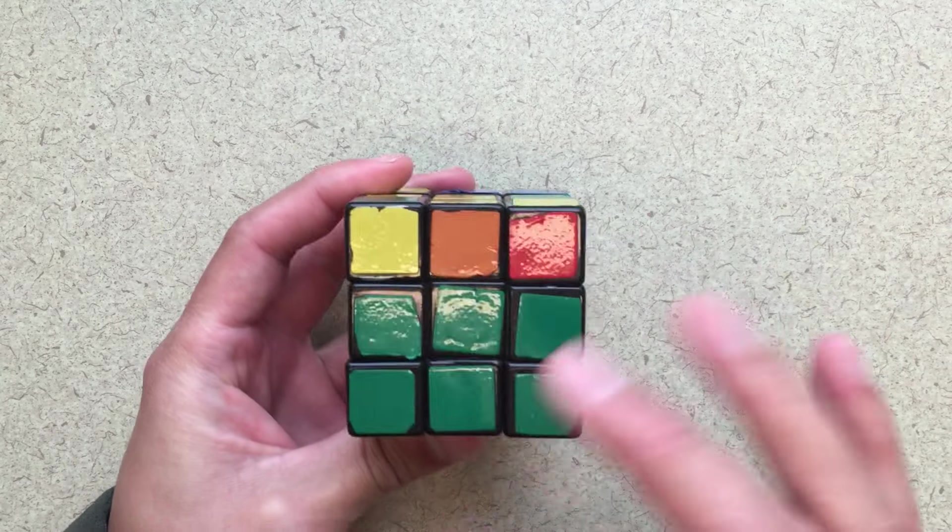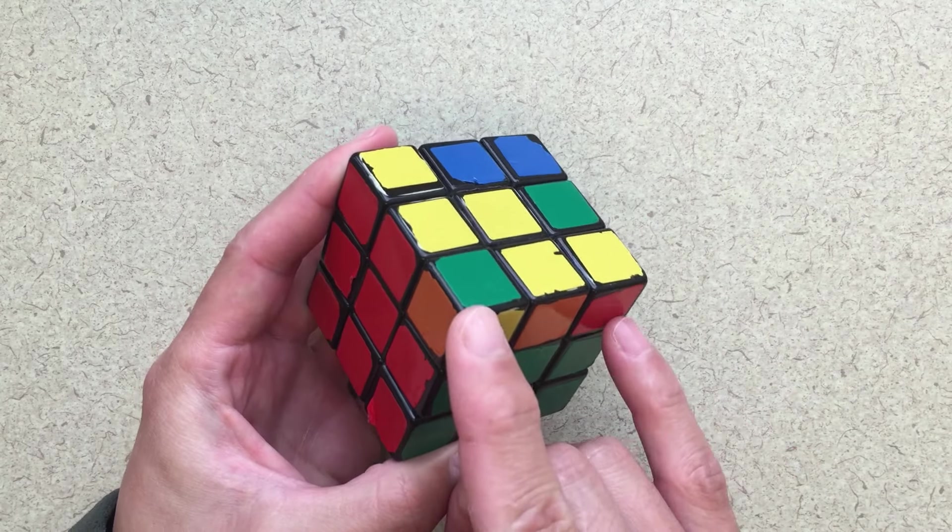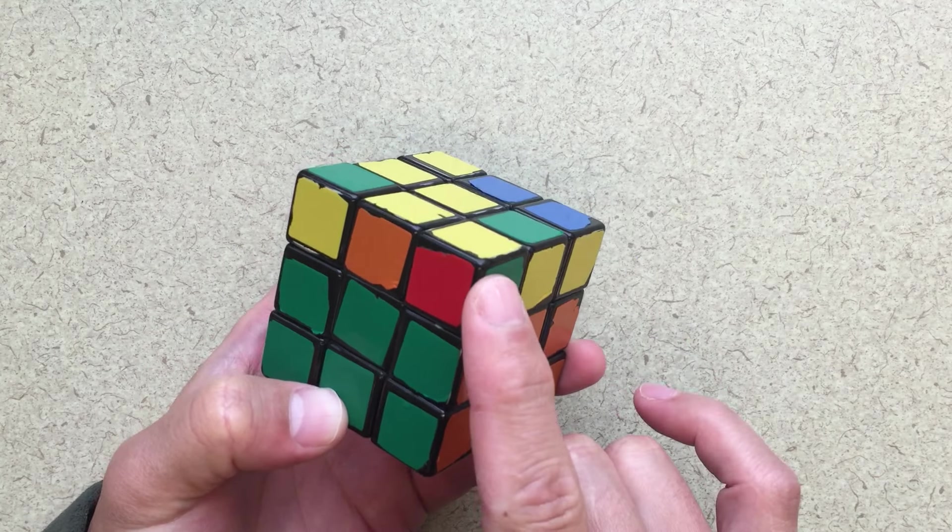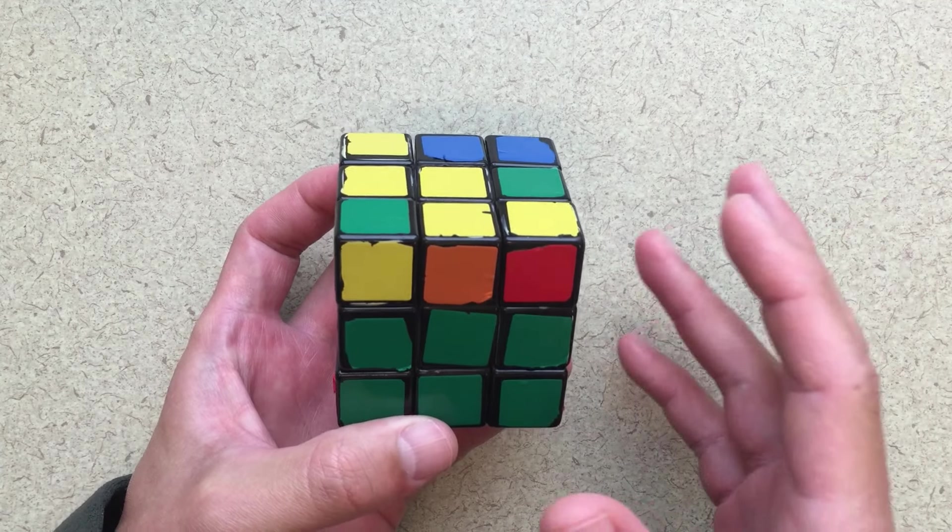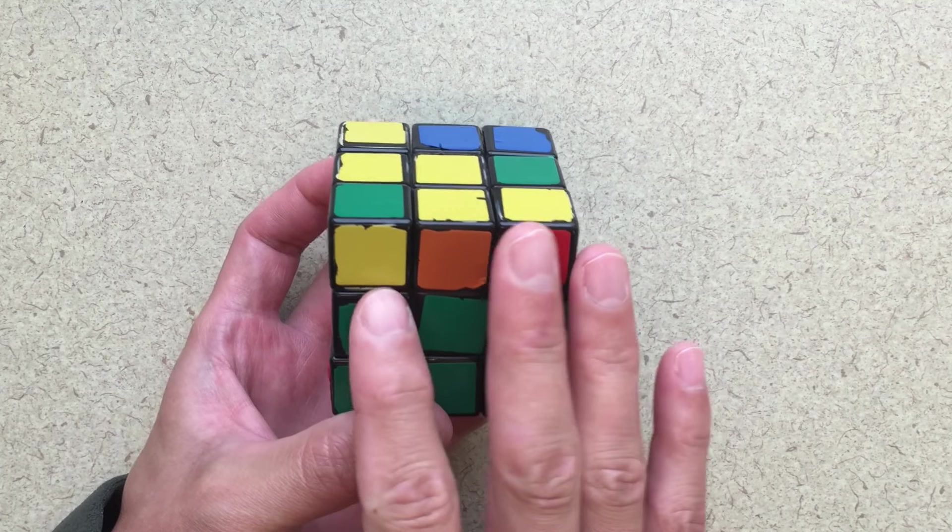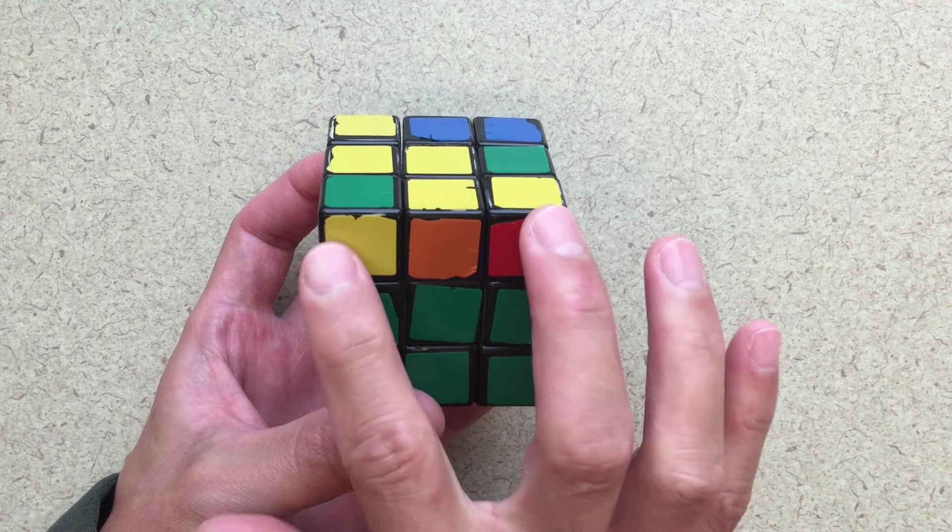Again, orientation doesn't matter. So if we flip the cube over, we can check these two. So this piece and this piece, these two need to be switched, right? We need to switch those, and then we'll have them in the correct spots, regardless of orientation. So we want to do the corner switcher move with these two pieces.